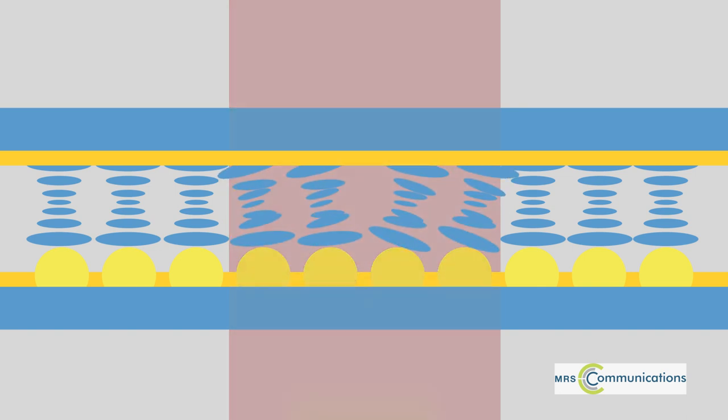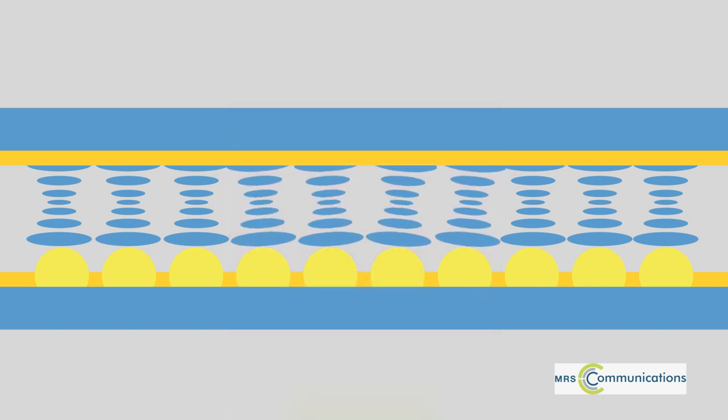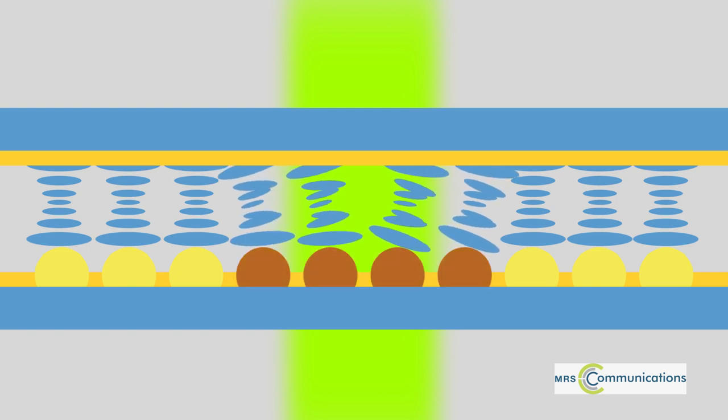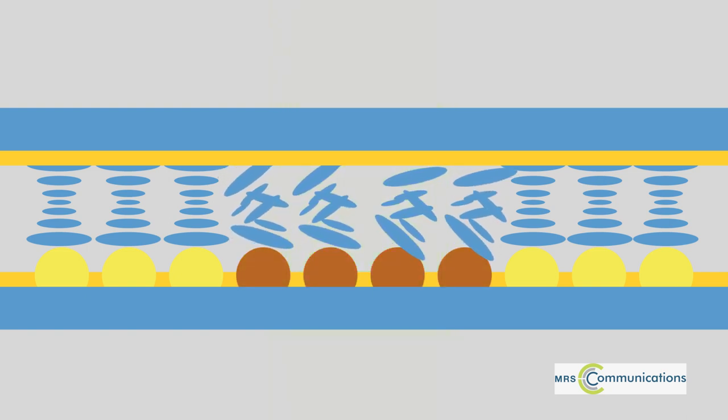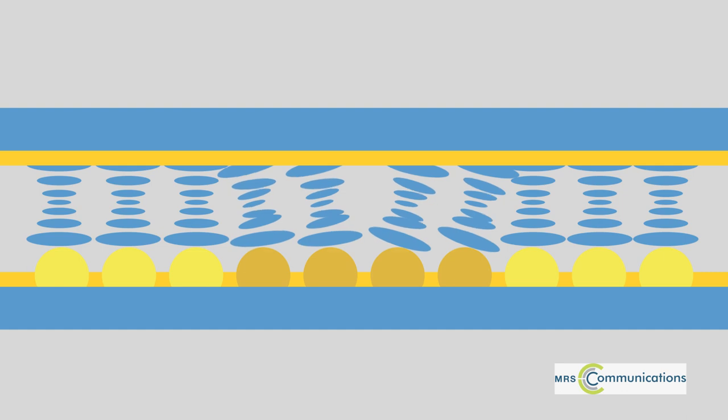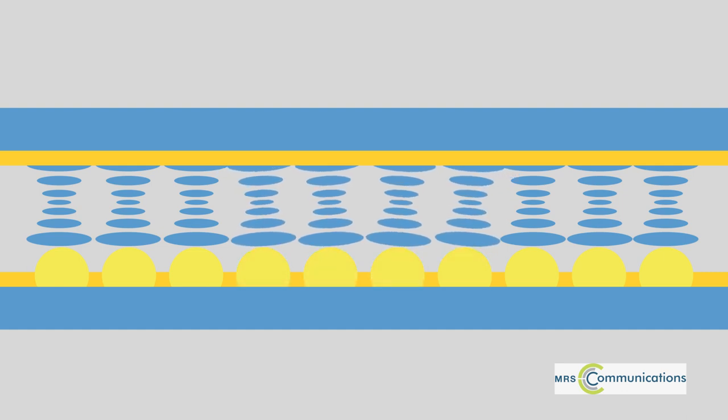By exploiting the gold nanoparticles' plasmonic properties, the researchers discovered that they could force the same switching behavior over a small area using a laser beam, all in a matter of seconds. Switching the laser off allowed the molecules of the liquid crystal to cool and relax back to their original configuration.